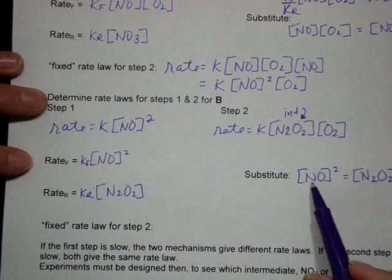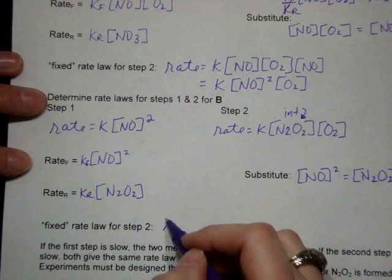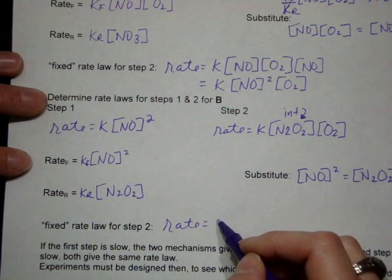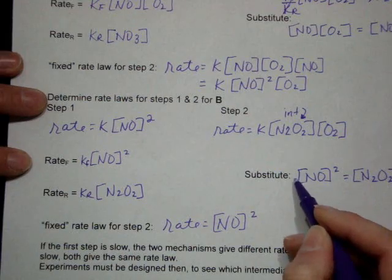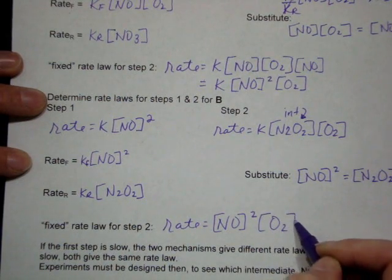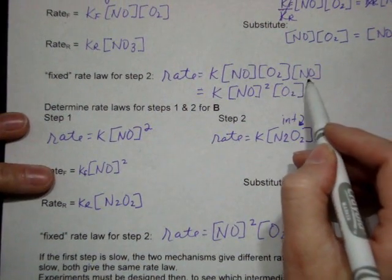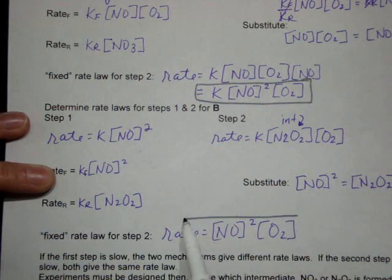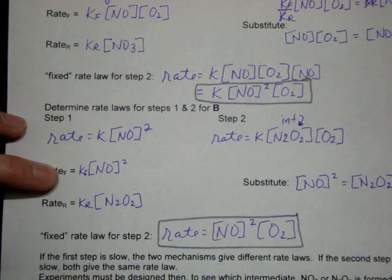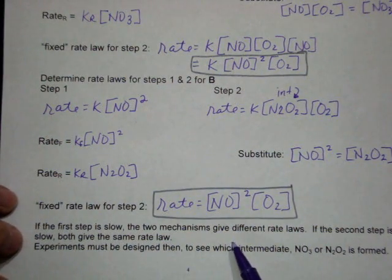Again, we can substitute in to fix the sort of messed up spot here where we had the intermediate. So the fixed rate law for step two becomes rate equals NO squared, we replace the N2O2, times O2. So if we look at the two options that we have, we came up with this for mechanism A. We came up with this for mechanism B. They gave us the same overall mechanism.